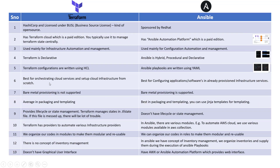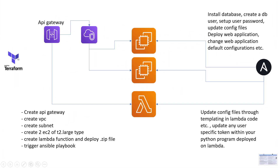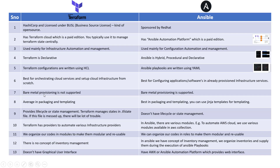Point number six: Terraform is best for orchestrating cloud services and setting up cloud infrastructure from scratch, whereas Ansible is suited for configuring applications or software on already provisioned infrastructure. Additionally, you can use Terraform to interact with multiple cloud providers — for example, EC2 instances on AWS and virtual machines on Azure within the same config file. Terraform does not support bare metal provisioning, whereas Ansible does. Another key difference is templating: Ansible is very strong in packaging and templating using Jinja templates, while Terraform is average in this area.